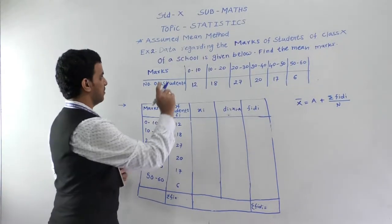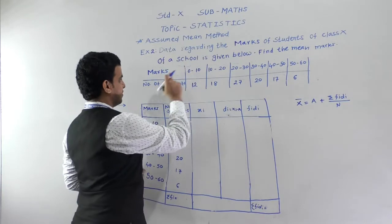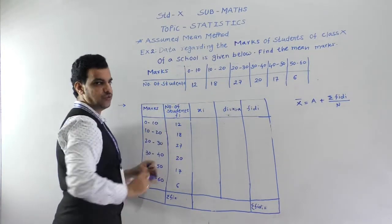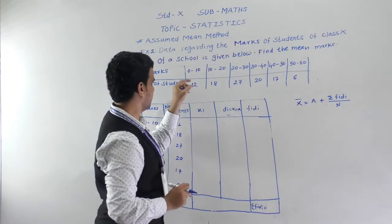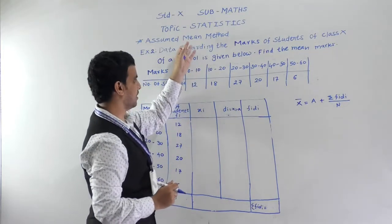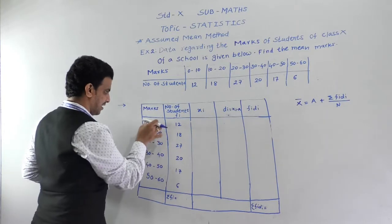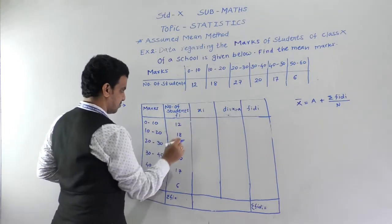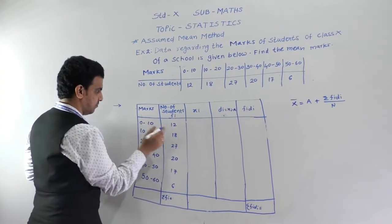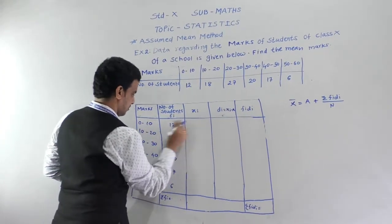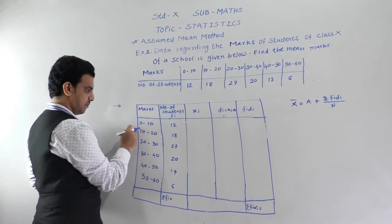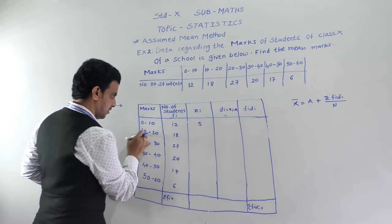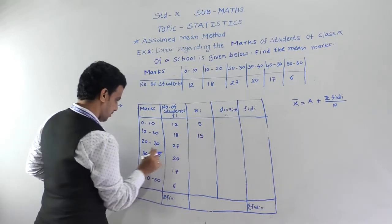The second example gives marks of students and the number of students; we need to find the mean marks using the same assuming method. Class intervals and frequencies are already written. Finding class marks: for 0–10, the class mark = (10 + 0)/2 = 5; then 15, 25, 35, 45, and 55.